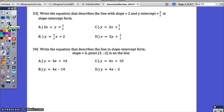Number 33: write an equation that describes a line with slope equals 2 and Y-intercept equals 3/2 in slope-intercept form. If you don't remember what this is, always take a look at your formula sheet. Slope-intercept form is Y equals MX plus B. In this form, M stands for the slope and B stands for the Y-intercept.